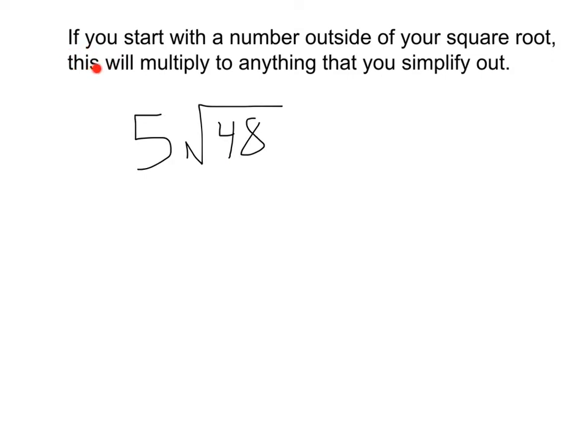Another important thing here I want you to write down is if you start with a number outside of your square root, this will multiply to anything that you simplify out. For example, here we have 5 square root of 48. This 5 is outside the square root, but let's proceed like normal focusing on this square root. So break this 48 down into factors. We could do 6 times 8. We could break 6 down into 3 times 2. 8 could be 4 times 2, and 4 we can do 2 times 2. So we've got quite a few factors here, but again, same thing, let's just look for pairs.